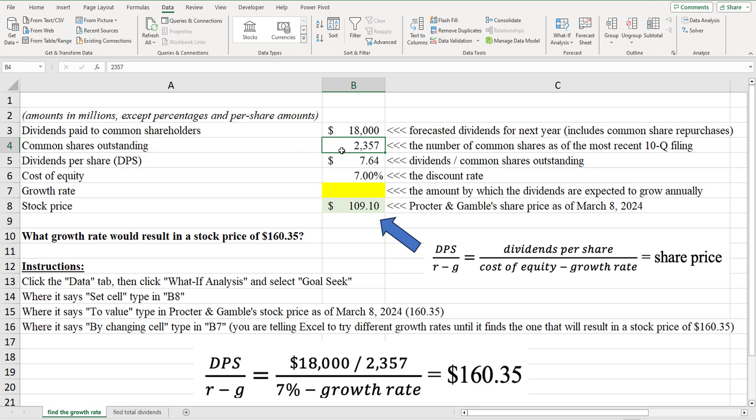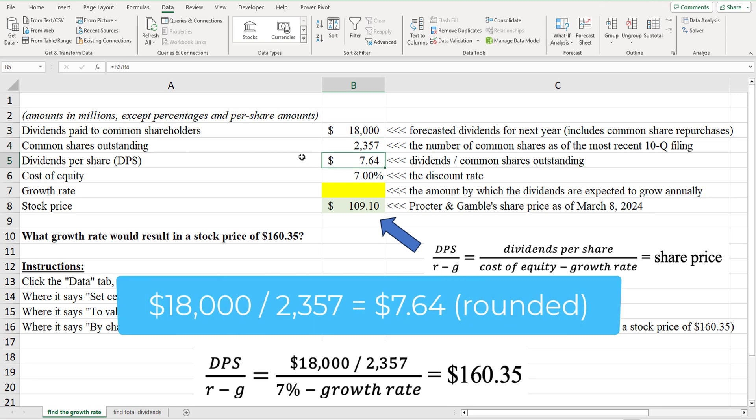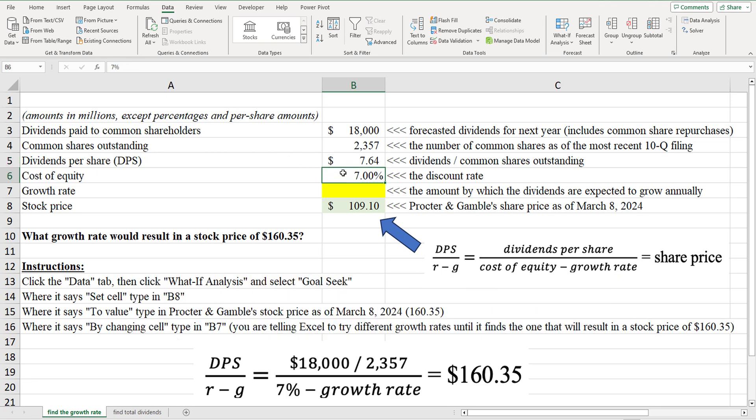Now, common shares outstanding, again, in millions, but we've got 2,357 here. And that results, we take this divided by this, dividends per share of $7.64. Now, again, assuming a cost of equity is 7%. Now, we don't know the growth rate.